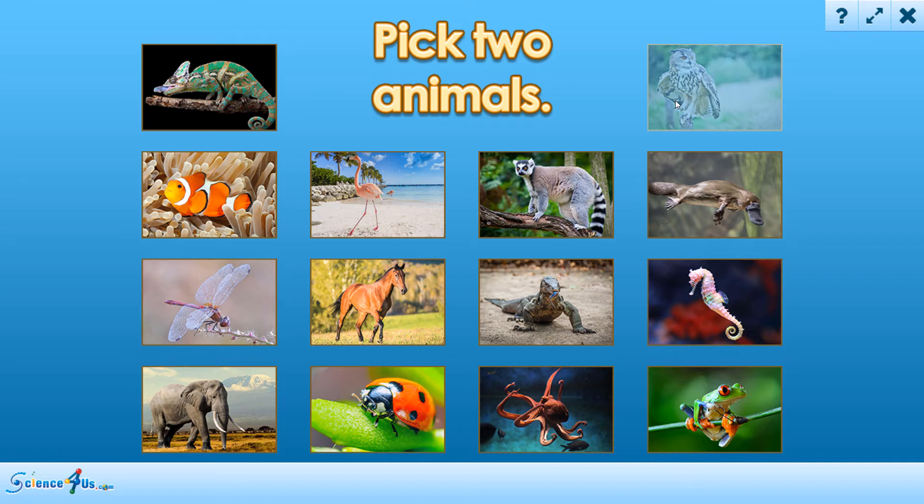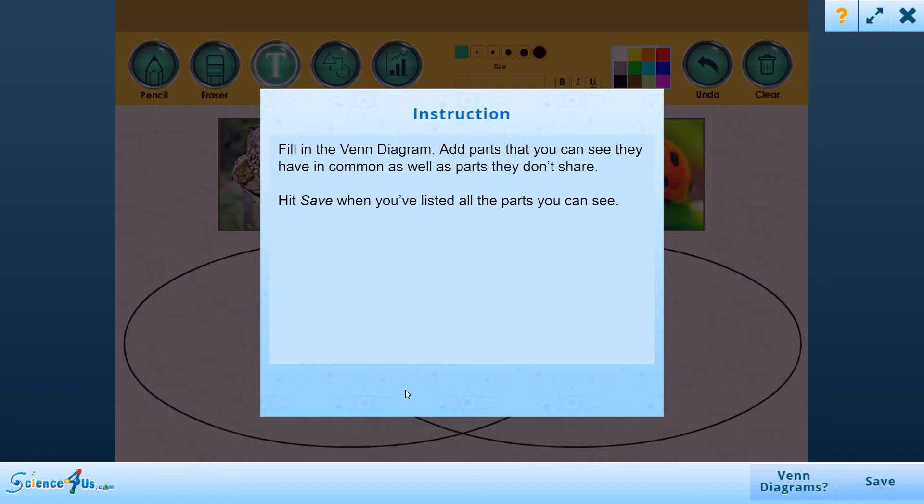Owl. That's one. Pick another. Ladybug. Okay, that's two. Let's compare and contrast using a Venn diagram. Fill in the Venn diagram. Add parts that you can see they have in common, as well as parts they don't share. Hit save when you've listed all the parts you can see.